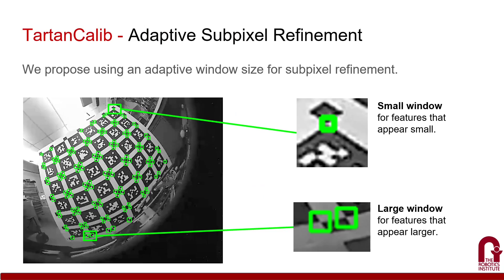The next step is to perform adaptive subpixel refinement. Typically, subpixel refinement is performed using a static window size, which is not only a sensitive hyperparameter, but is also non-ideal when feature size varies across the image. We show how choosing the window size adaptively based on feature size in the image frame improves the accuracy of detections.